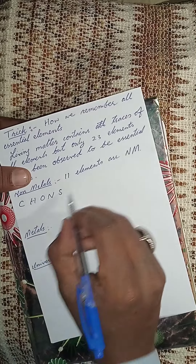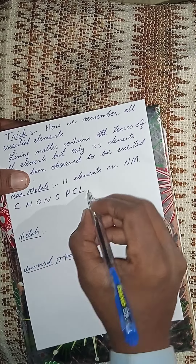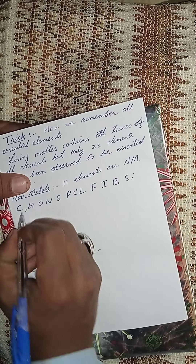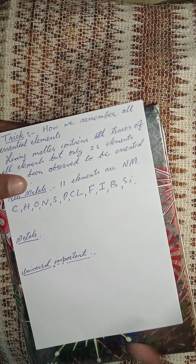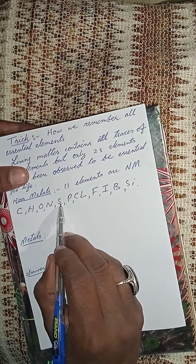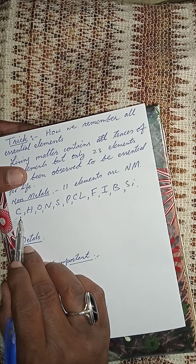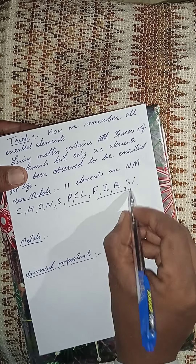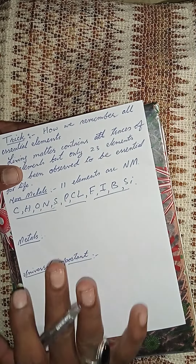The trick is C-H-O-N-S, 'Chons pickle 50.' These are all the non-metal essential elements for life: carbon, hydrogen, oxygen, nitrogen, sulfur, phosphorus, chlorine, fluorine, iodine, boron, and silicon. So 'Chons pickle 50' is how we remember these 11 non-metal elements.